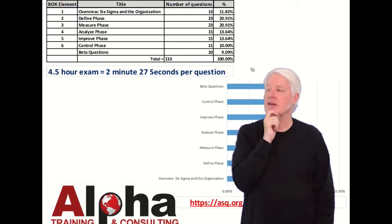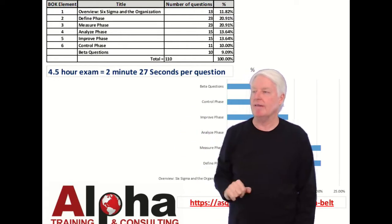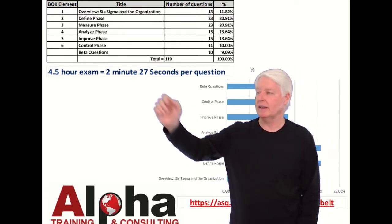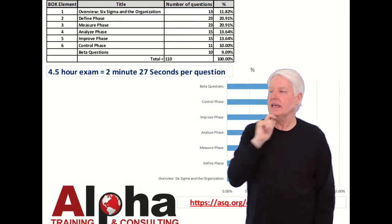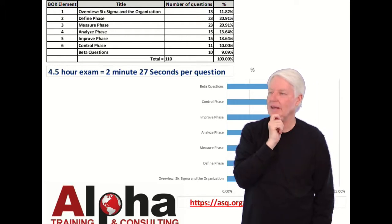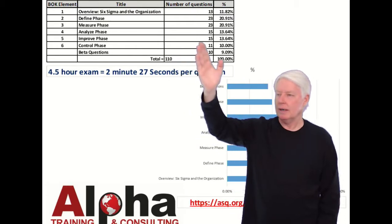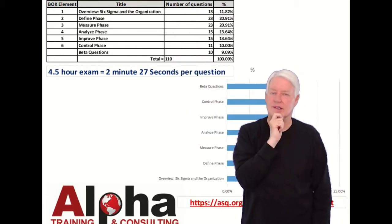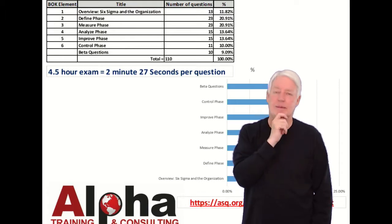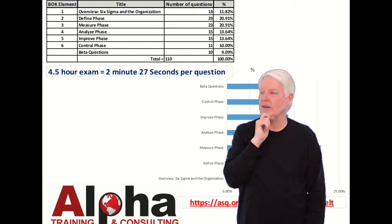The first element is overview of Six Sigma and the organization. You're going to get 13 questions on that. Then the define phase, 23 questions, one of the big hitters there on the test. Measure phase, 23. Analyze phase, which is one of the more difficult elements of the Body of Knowledge, I feel. It has been my experience for most students, and there's 15 questions there. Improve phase, 15 questions there too. That's also a hard chapter. Analyze and improve are probably the most difficult elements of the Body of Knowledge. Then, of course, we have the control phase with 11 questions on that one.